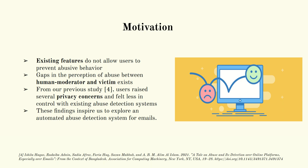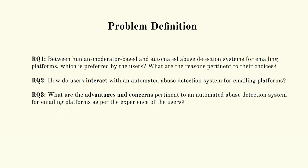The motivation of our study is that existing features do not allow users to prevent abusive behaviors. Also, there are gaps in the perception of abuse between human moderators and victims. From our previous study, users raised several privacy concerns and felt less control with existing abuse detection systems. Therefore, these findings have inspired us to explore an automated abuse detection system for email.